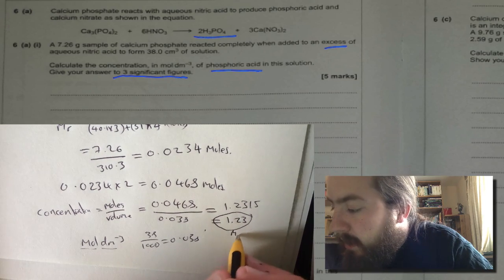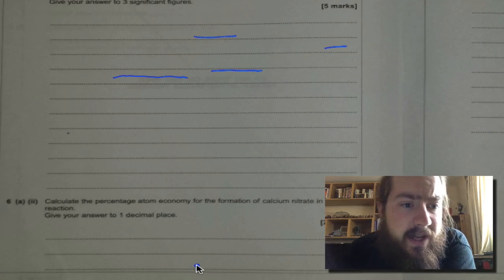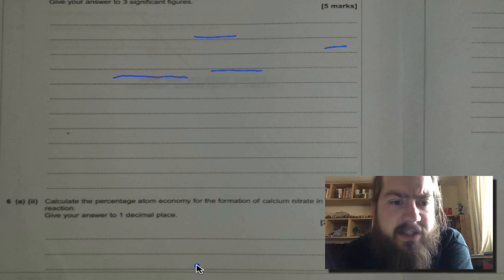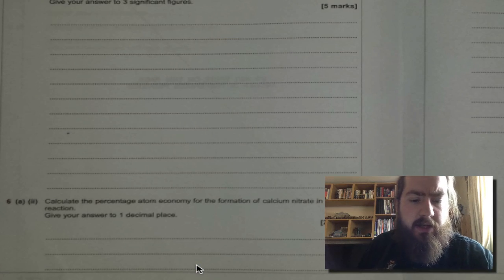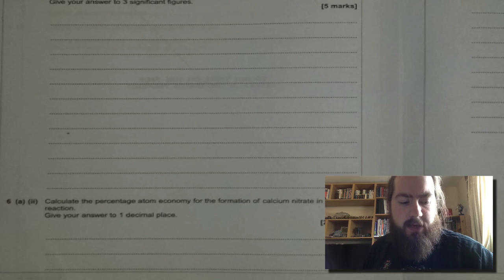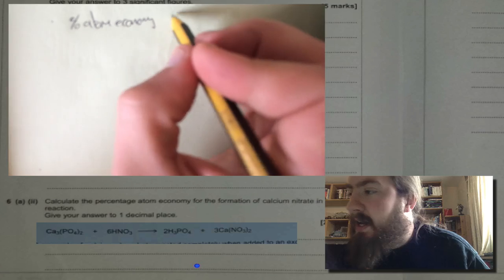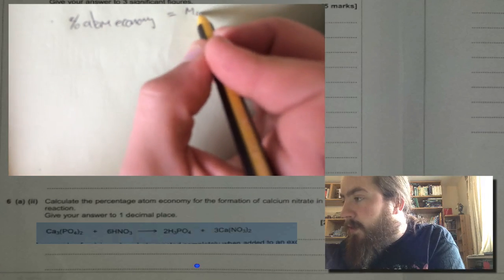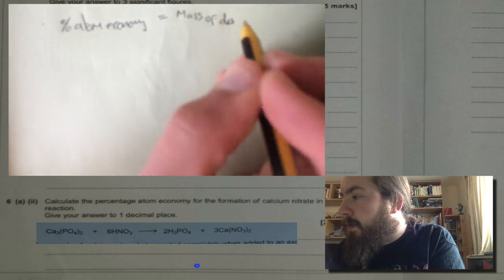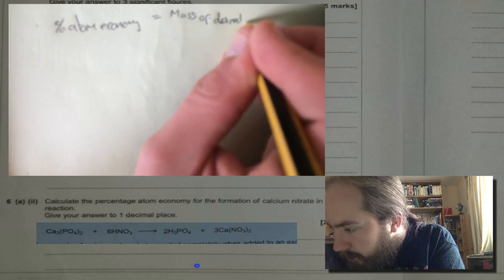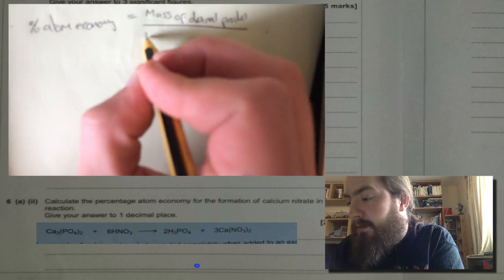Question 6a part 2: Calculate the percentage atom economy for the formation of calcium nitrate in the reaction. Give your answer to one decimal place. Percentage atom economy is the mass of your desired product divided by the total mass of all your reactants.